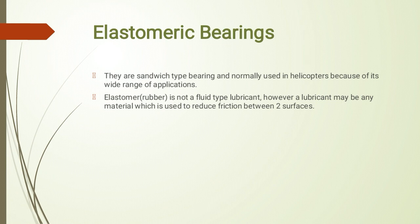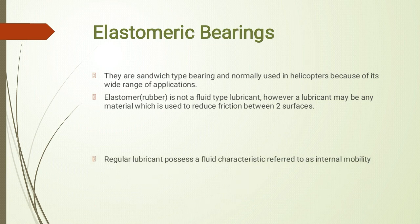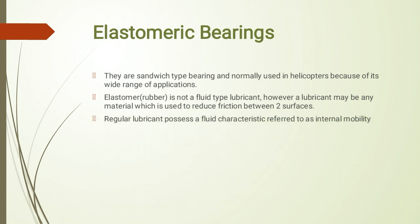Elastomer — that is rubber — is not a fluid type lubricant; however, a lubricant may be any material which is used to reduce friction between two surfaces. इस elastomeric bearing में एक rubber है जो elastomer kind of rubber है, और यह lubricant की तरह behave करती है। जो regular lubricants होते हैं जैसे कि grease — वो fluid characteristics possess करते हैं जिसे internal mobility कहते हैं।